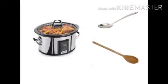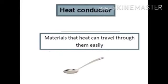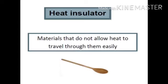This electric cooker is made of metal but its handle is made of plastic. We use spoons made of plastic, wood, or steel for mixing while cooking. Spoons made of plastic or wood are poor conductors of heat, while spoons made of steel are good conductors. Heat conductors are materials that heat can travel through easily. Heat insulators are materials that do not allow heat to travel through them easily — like a plastic spoon or wooden spoon.